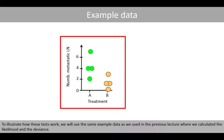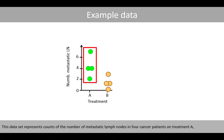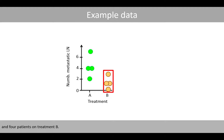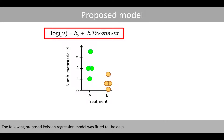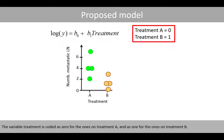To illustrate how these tests work, we'll use the same example data as we used in the previous lecture where we calculated likelihood and the deviance. This dataset represents counts of the number of metastatic lymph nodes in four cancer patients on treatment A and four patients on treatment B. The following proposed Poisson regression model was fitted to the data, with treatment coded as zero for treatment A and one for treatment B.